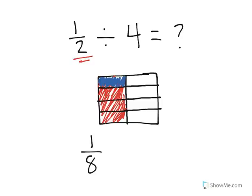That is how you divide a unit fraction by a whole number. You start with the amount, you divide it into that many equal pieces, and find out how much space that 1 piece takes up.